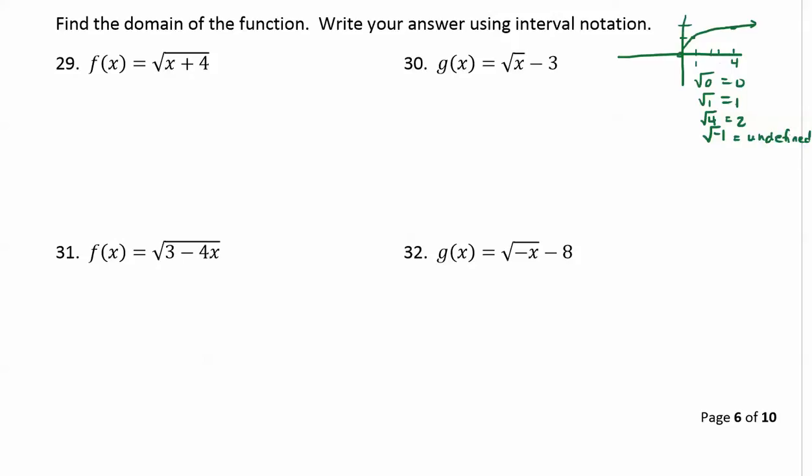The reason for that is because the definition of a square root is we're finding some number that when you multiply it by itself twice it gives you that result. For instance, 1 times 1 equals 1, so the square root of 1 is 1. 2 times 2 equals 4, or the square root of 4 is 2, but there is no possible way to get 2 of the same number that multiplies to make a negative 1. So square roots of negatives are undefined.